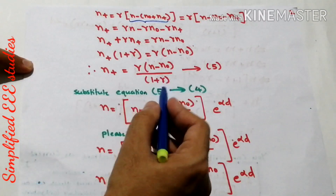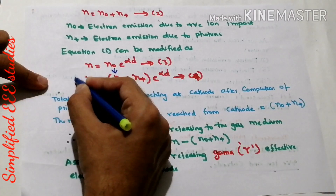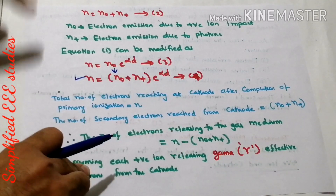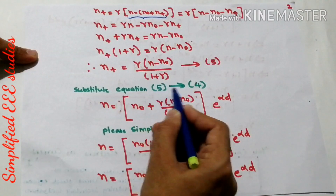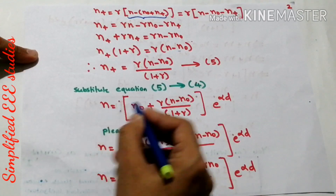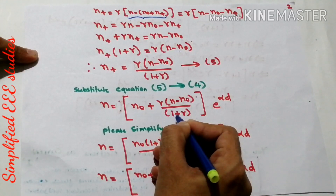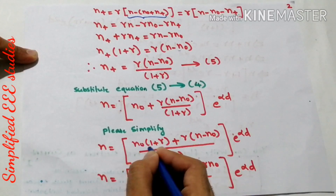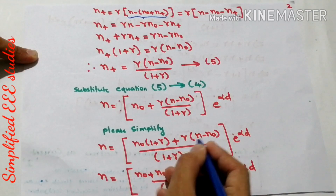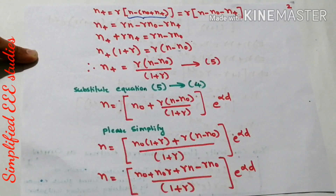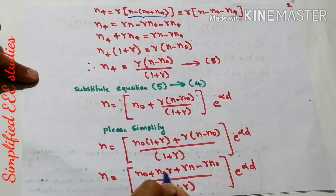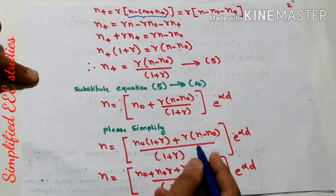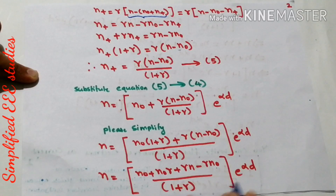Now substitute equation number 5 into equation number 4. Equation number 4 is N = (N₀ + N⁺)·e^(αd). Substituting N⁺: N = [N₀ + γ(N − N₀)/(1 + γ)]·e^(αd). After cross multiplication: N = [N₀(1 + γ) + γ(N − N₀)] / (1 + γ) · e^(αd). Expanding the brackets: N = [N₀ + N₀γ + γN − γN₀] / (1 + γ) · e^(αd).